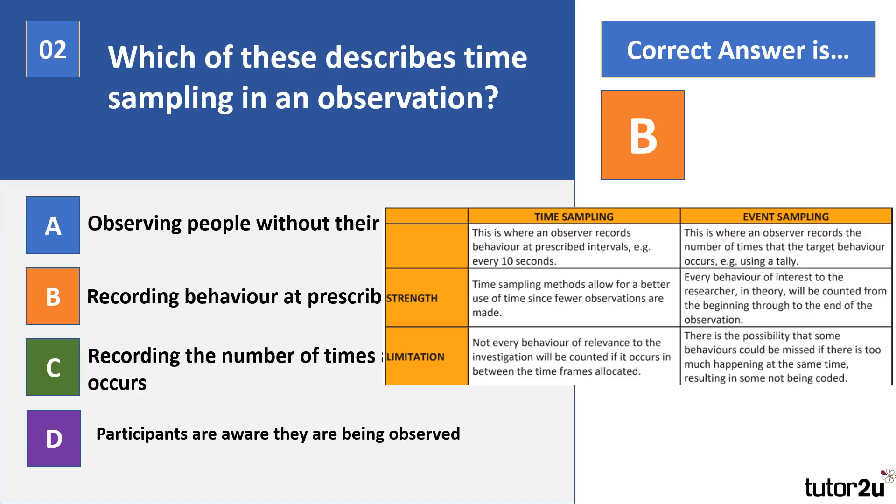Now observations is a really big area of your specification because you might be asked to comment on how you would carry out a particular observation as well as if it was covert or overt, etc. So those kinds of questions are going to be orientated around the use of time sampling and event sampling, perhaps use of behavioral categories as well.